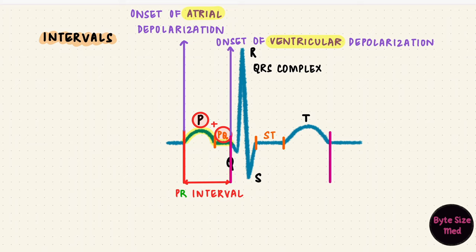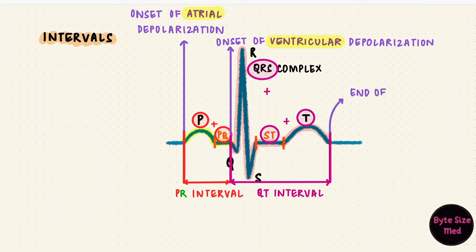Then we have the QT interval. That's from the onset of the Q wave to the end of the T wave. So it's the QRS complex along with the ST segment and the T wave. The end of the T wave is the end of ventricular repolarization. So it represents both ventricular depolarization and repolarization. The full ventricular action potential.